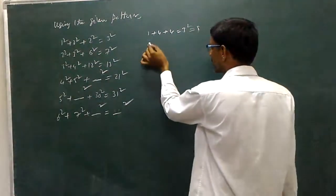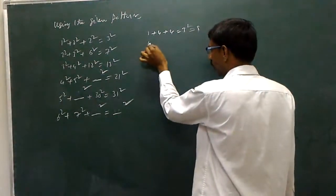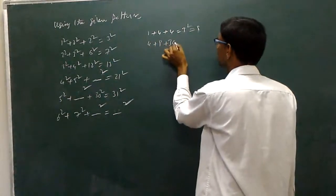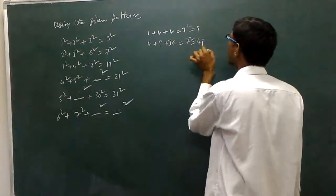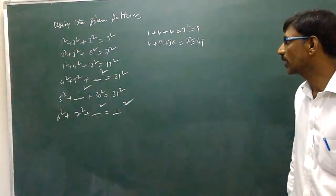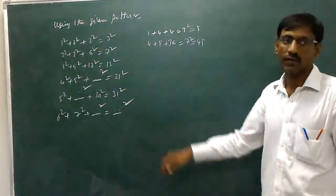Similarly, the second one. Four plus nine plus thirty-six is equal to seven square, that is equal to forty-nine. Is it right or wrong? Yes sir.